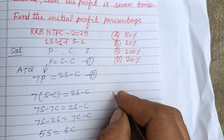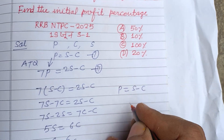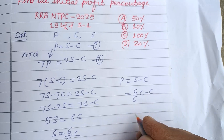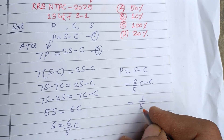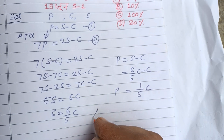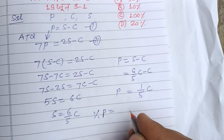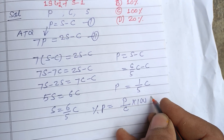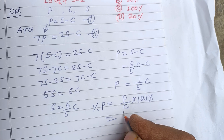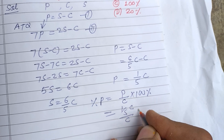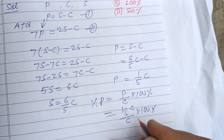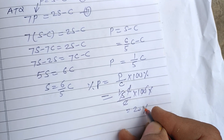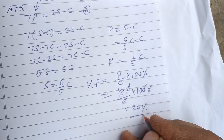Now, profit = s − c = 6c/5 − c = c/5. Profit percentage = (profit / cost price) × 100 = (c/5) / c × 100 = 20%. So the initial profit percentage is 20%.